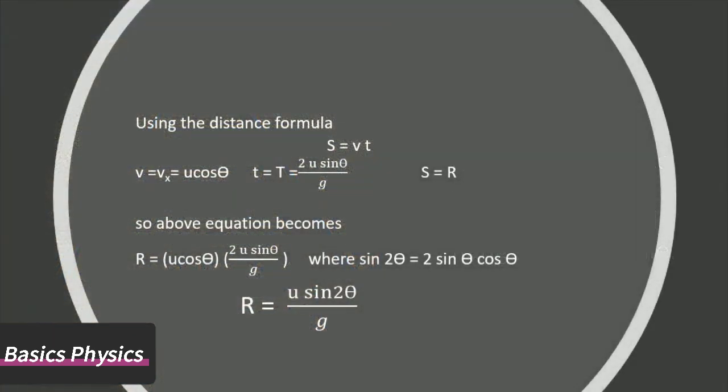To find the range of projectile, we use the distance formula: S = vt. Where v is the horizontal velocity component equal to U cos θ, and T is the time of flight which is equal to 2U sin θ / g. And put S = R.